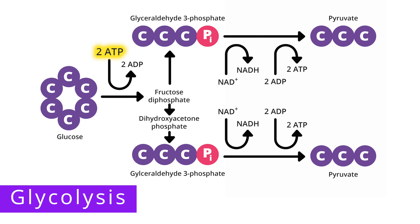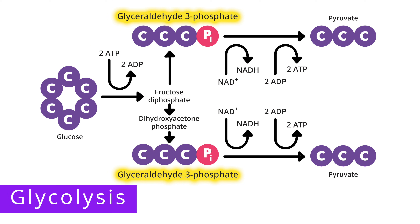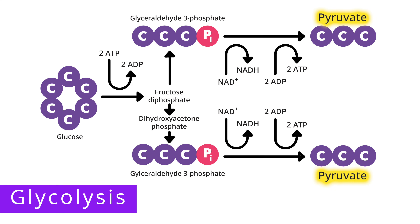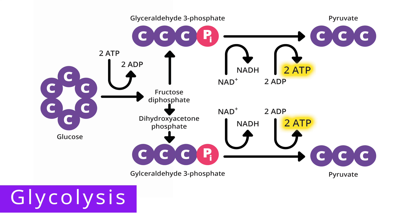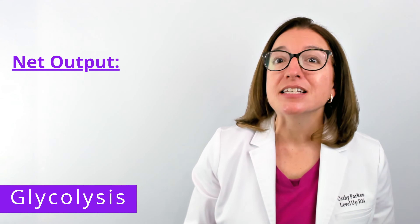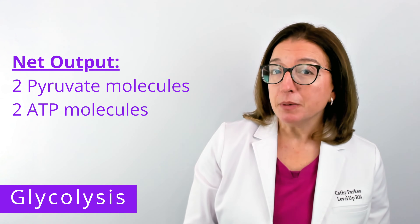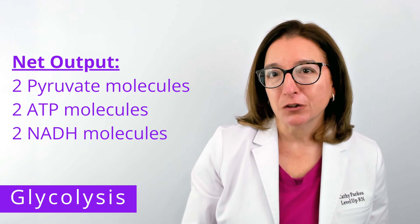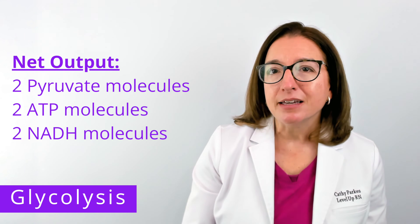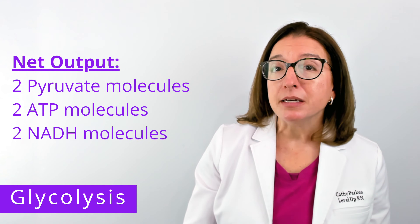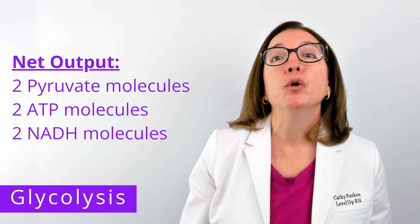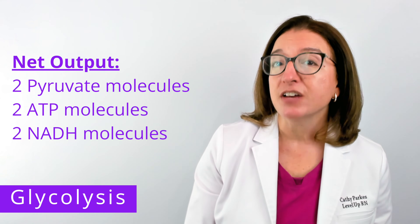During the energy payoff phase, these two G3P molecules are oxidized to produce two pyruvate molecules. And because every oxidation reaction is paired with a reduction reaction, we also have the reduction of the two NAD+ molecules during this phase. These two redox reactions produce a total of four ATP molecules. So the net output for glycolysis is two pyruvate molecules, two ATP molecules, and two NADH molecules. The reason why we have two instead of four ATP is that even though we produced four ATP during the energy payoff phase, we had to put in two ATP molecules during the energy investment phase.